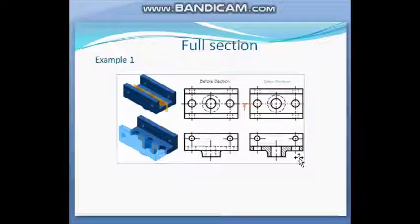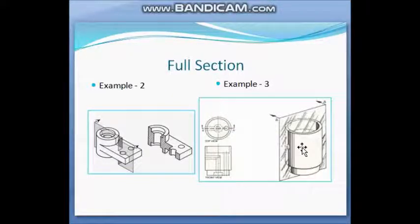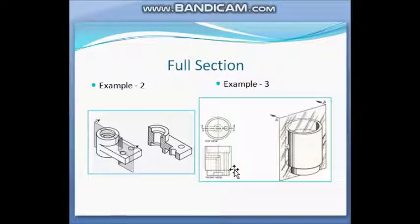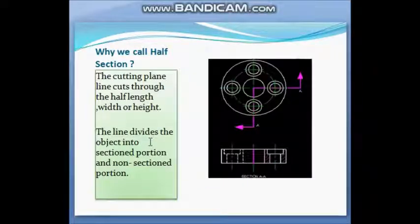This is your full section. There is another example — a cylindrical object where in the front view we cannot understand the interior details. After cutting with a section plane and removing the front face, we get this type of object. In another example, the object is divided into two parts, and after removing the left side part we get this figure. The hatch line indicates that the object has been sectioned.